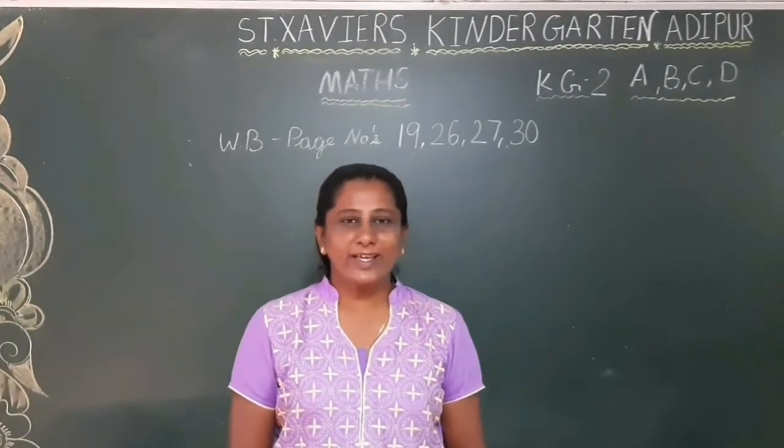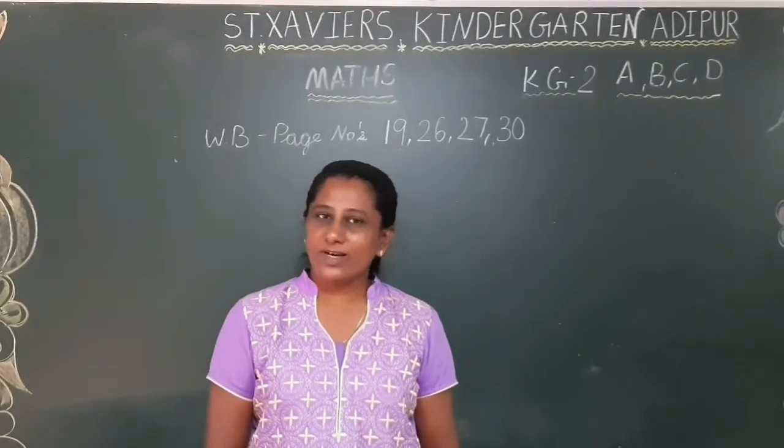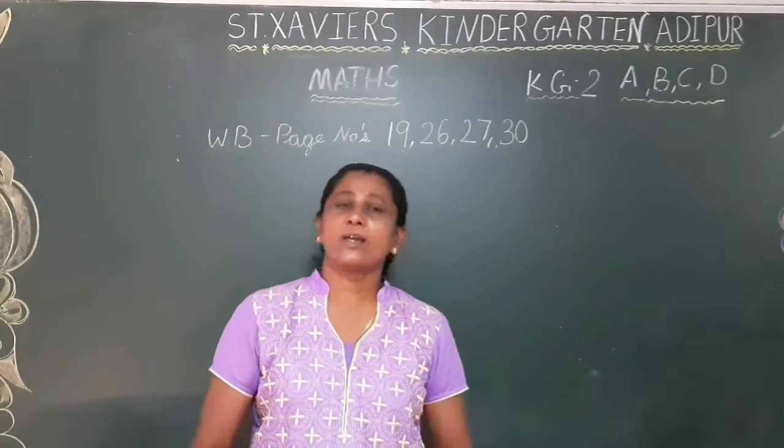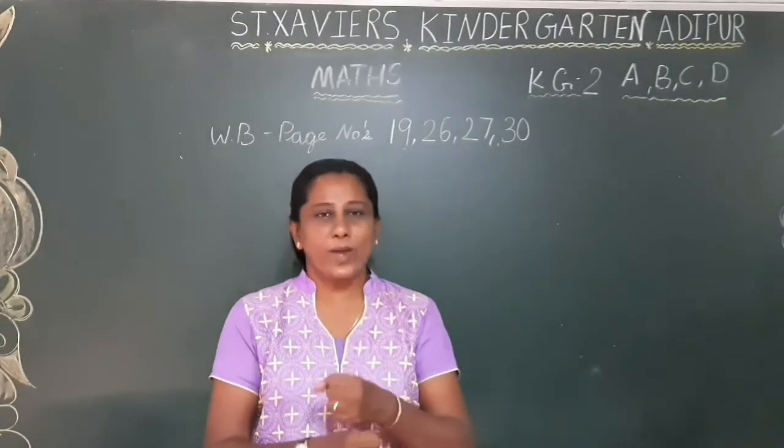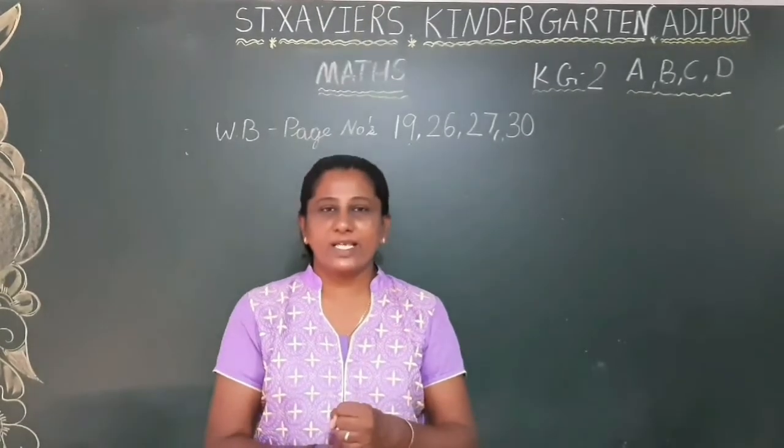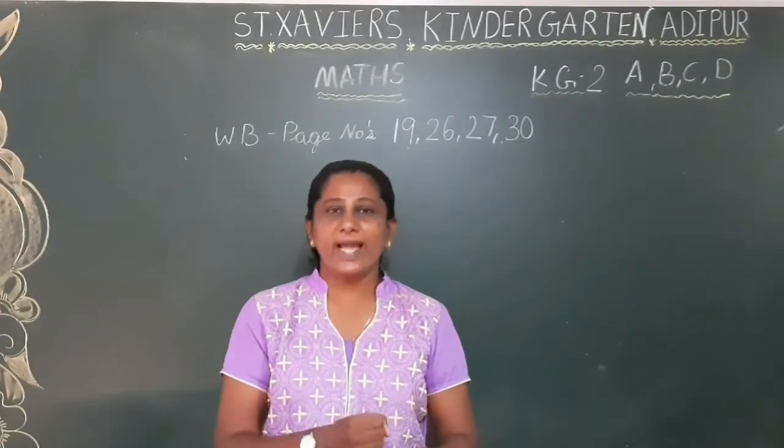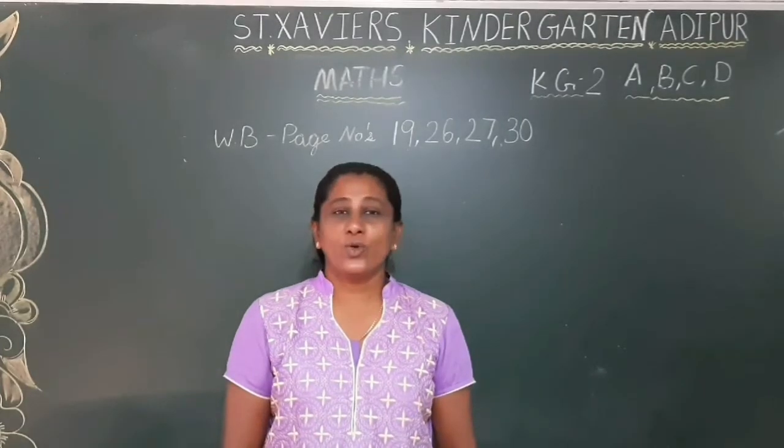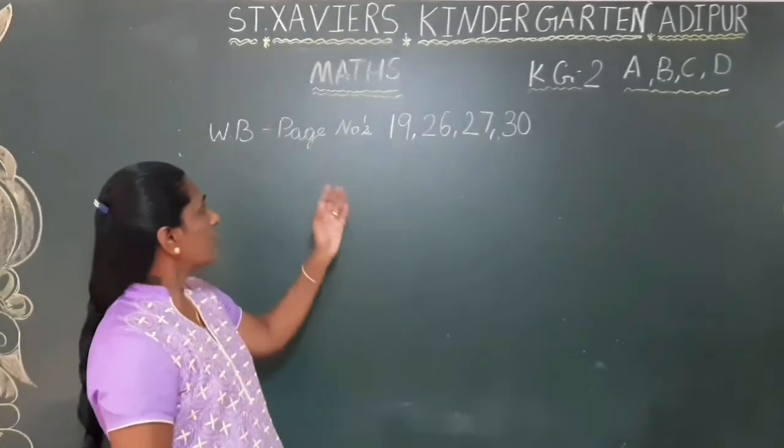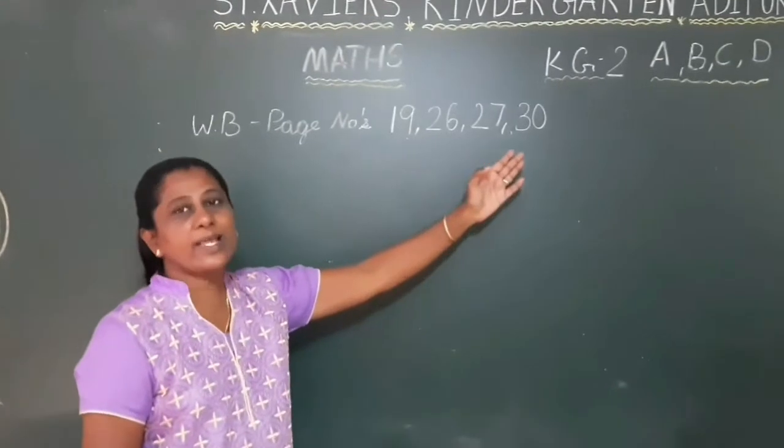What are we going to do today? Numbers 21 to 30. We will revise first. All of you, you have to say with me loudly. Okay. 21, 22, 23, 24, 25, 26, 27, 28, 29, 30. You are going to write numbers 21 to 30 in your workbook. And you are going to do page number 19, 26, 27 and 30.